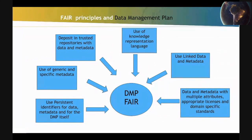For a DMP to be FAIR, it is important to have persistent identifiers, generic and specific metadata, trusted repositories, links of data, licenses, and domain-specific standards.